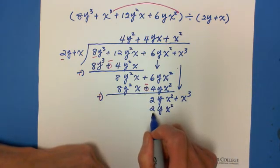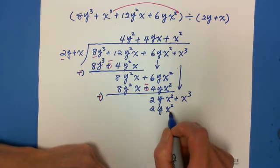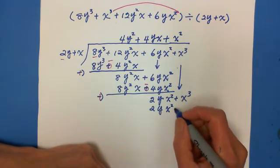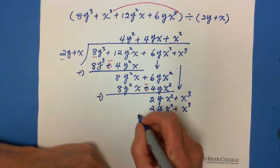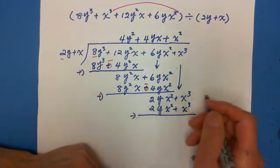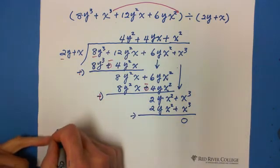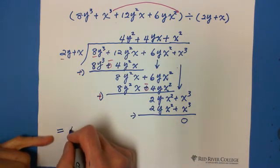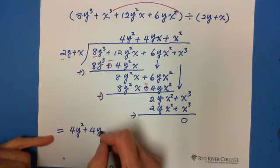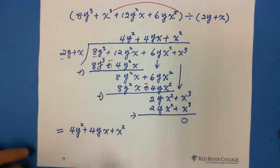The next is x times x squared is x cubed. In this situation, subtract. All equals 0. It's divisible. So the answer equals 4y squared plus 4y x plus x squared. Here. This is the answer.